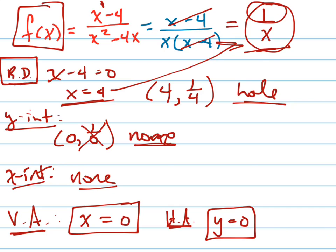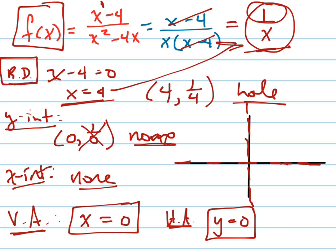Now I need to plot a couple of points. Let's go ahead and graph this. There's my x-axis and y-axis, which also happen to be my asymptotes. Let me draw in my dotted lines for the vertical and horizontal asymptotes. I'll make a t-chart: if x equals 1, y equals 1 over 1, which is 1. If x equals 2, y equals 1/2.